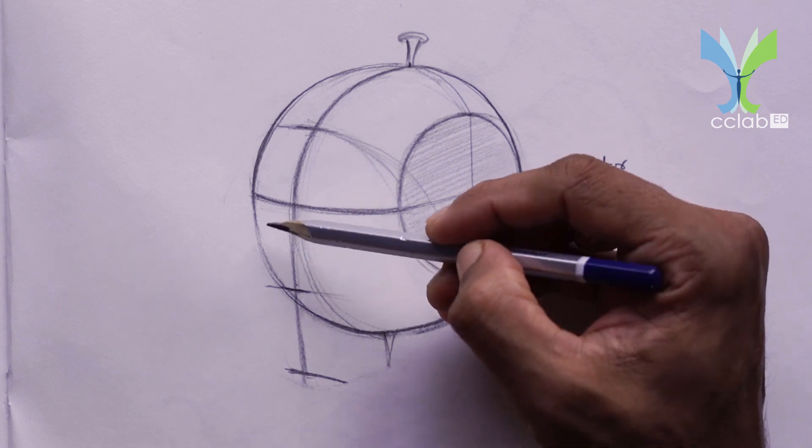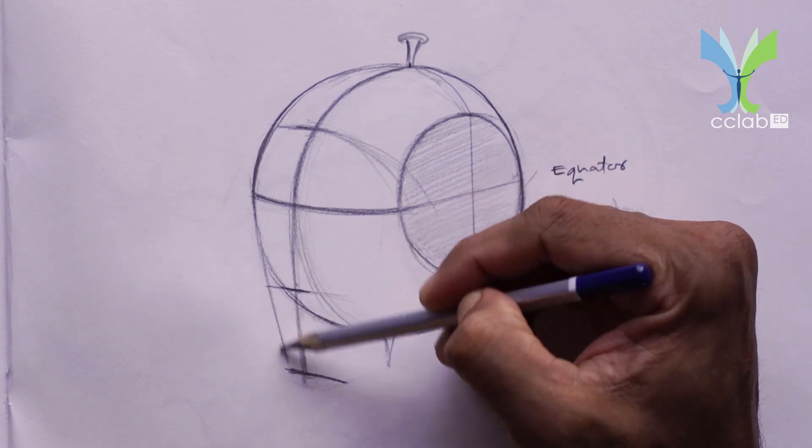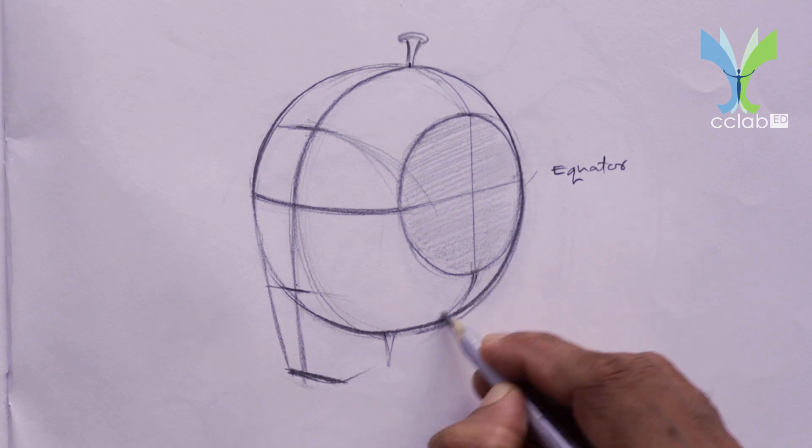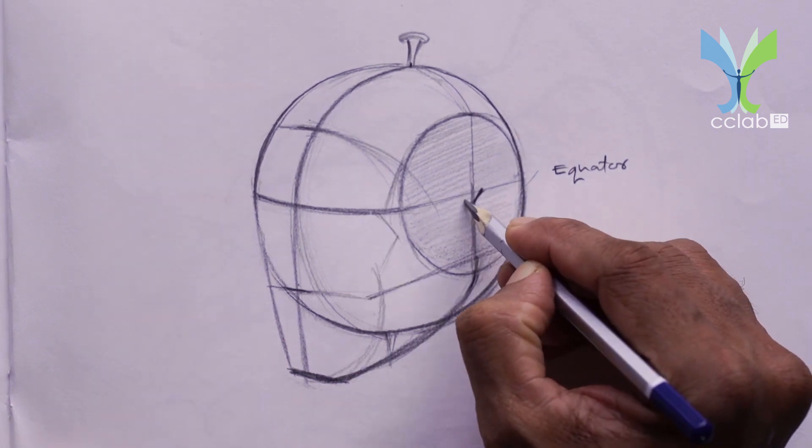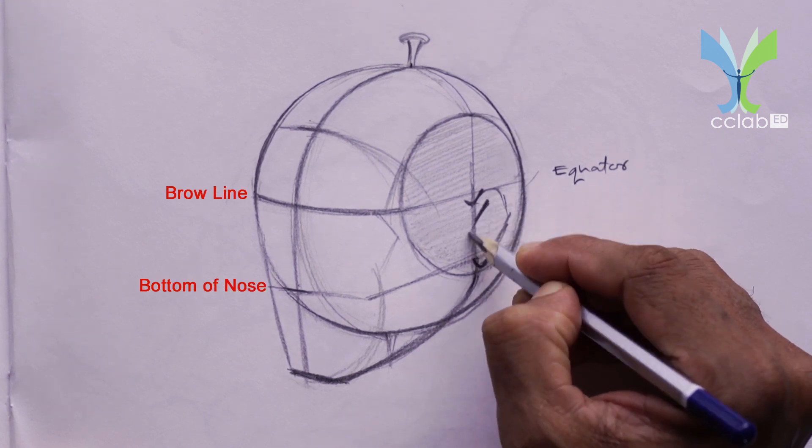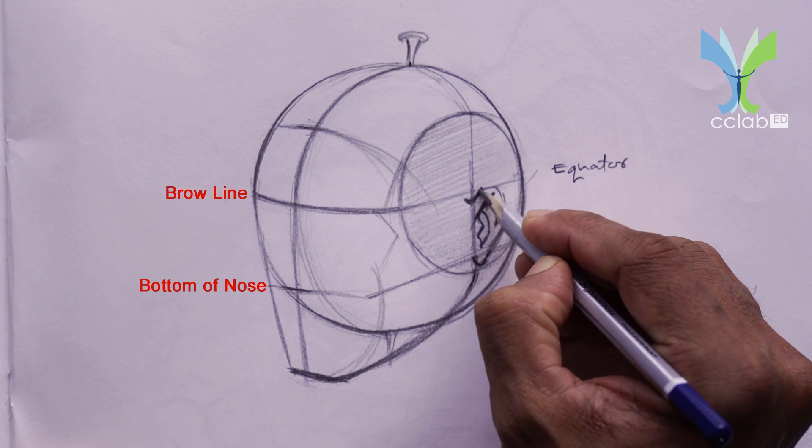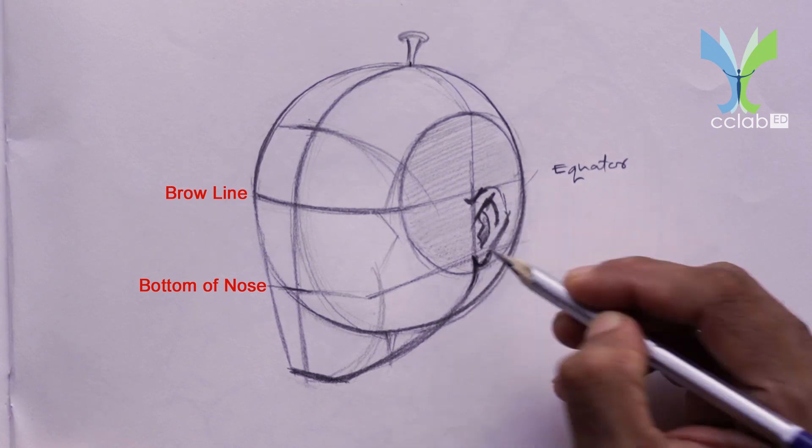We can now draw the plane of the face by drawing in the jaw line which connects about half around the ball on each side. The ears attach along the halfway line at a distance about equal to the space from the brows to the bottom of the nose.